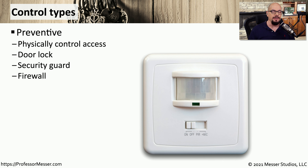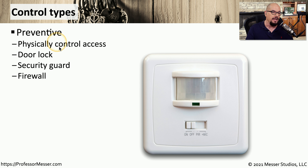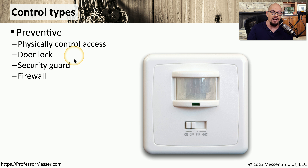Let's now look at some common control types. What's interesting is that a certain technology could fit into multiple control types. The first control type is a preventive control — something that prevents access to a particular area. Locks on a door or a security guard would certainly prevent access, as would a firewall, especially if we have a connection to the internet.